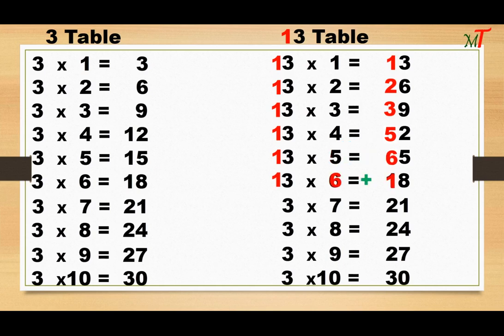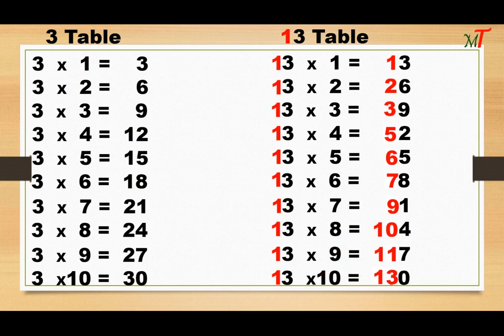7 plus 2 becomes 9 — 13 7s are 91. 8 plus 2 becomes 10 — 13 8s are 104. 9 plus 2 becomes 11 — 13 9s are 117. 10 plus 3 becomes 13 — 13 10s are 130.